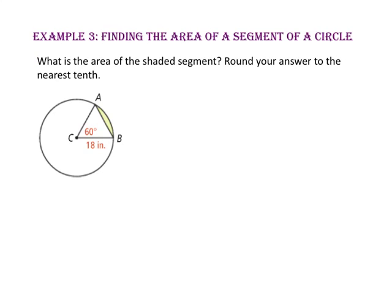In example 3, we will find the area of a segment of a circle. What is the area of the shaded segment? Round your answer to the nearest tenth. The area of a segment equals the area of the sector minus the area of the triangle. Starting with sector ACB: since arc AB is 60 degrees, sector ACB is 60 out of 360, or one-sixth of the circle. The area of the circle is π times 18 squared = 324π square inches.